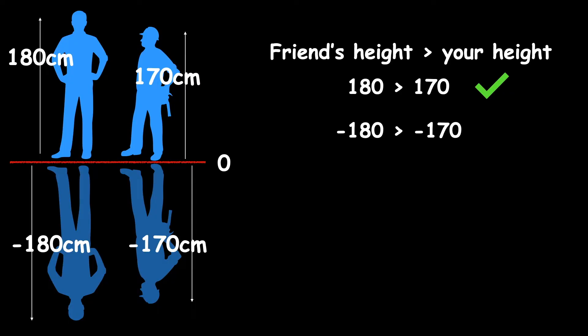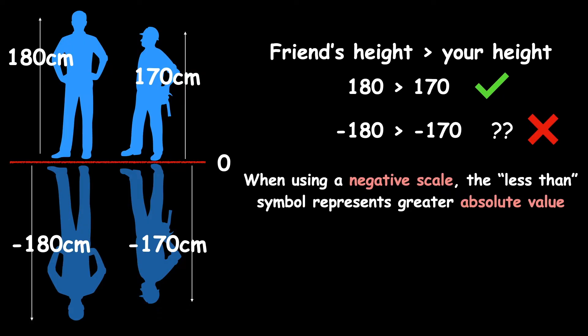Well you can't say negative 180 is greater than negative 170. That doesn't make any sense. That is wrong. What you need to realize here is that when you're using a negative scale, the less than symbol represents greater absolute value.